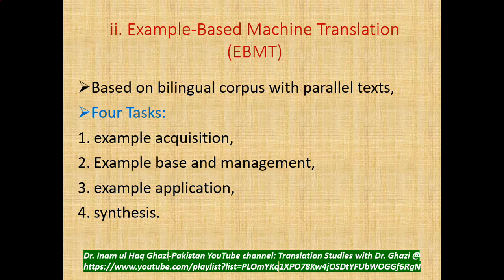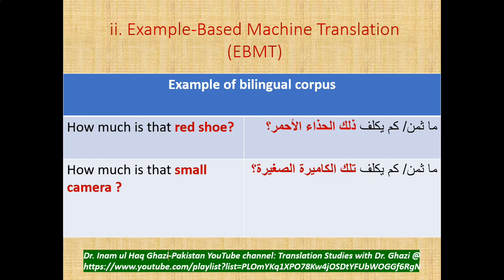Let's take a quick example. The bilingual corpora has Arabic on one side and English on the other. Taking 'How much is that?' as the original text to be translated into Arabic, the machine finds 'red shoes' and 'small camera' in both corpora. Once the first example is translated, the machine brain is trained to understand this pattern and follow the same translation structure in other sentences.